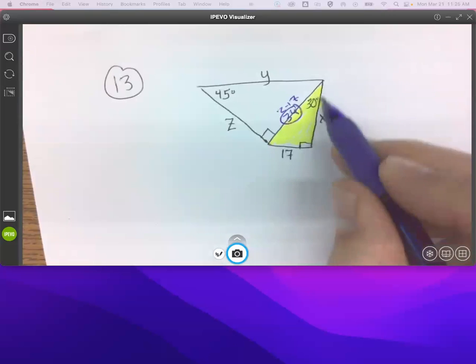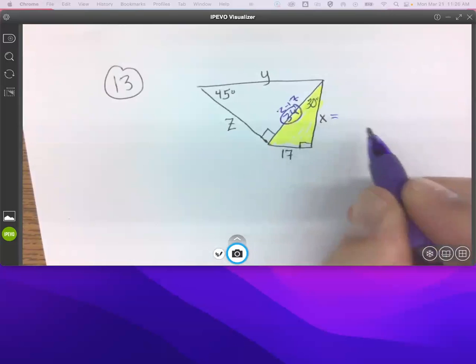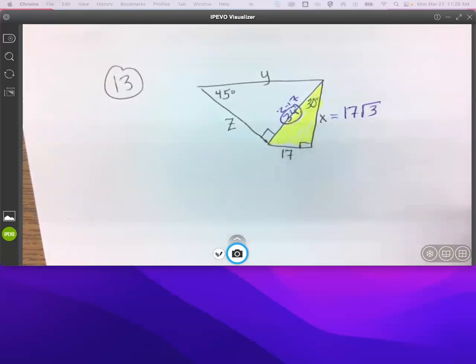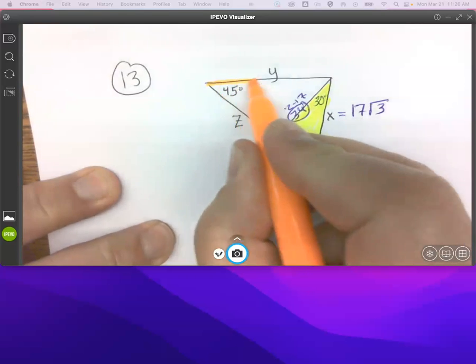And how big is this right-hand side, the leg? 17 root 3. Okay. So that finishes this. That's all I needed was to get, really, that 34. That's what I was aiming for. Any questions on that?